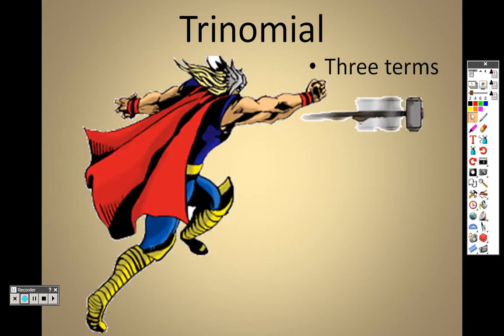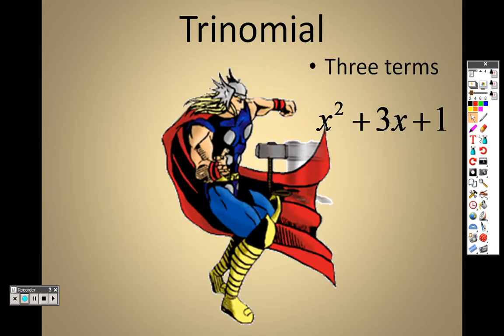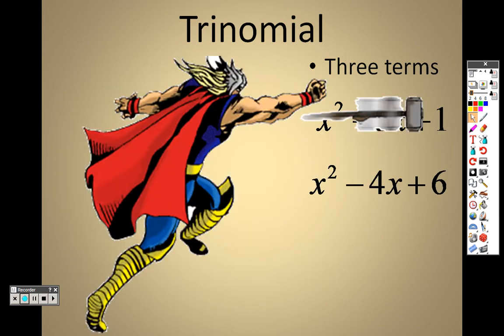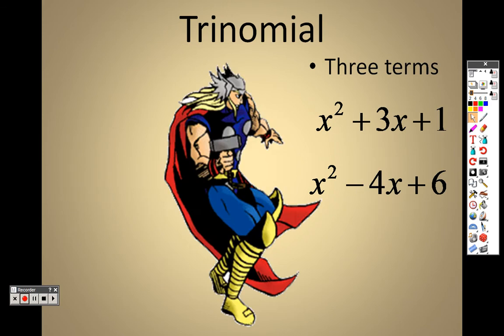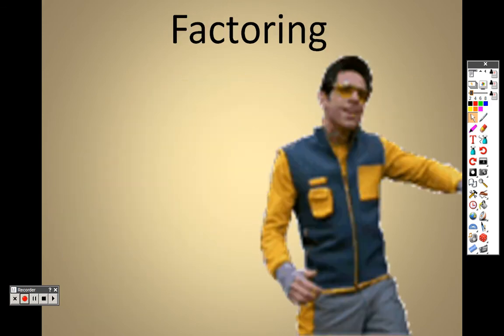Trinomials have three terms, so like x squared, a 3x, and a 1 — those are three terms. An x squared is a term, a negative 4x is a term, and a 6 is a term as well.